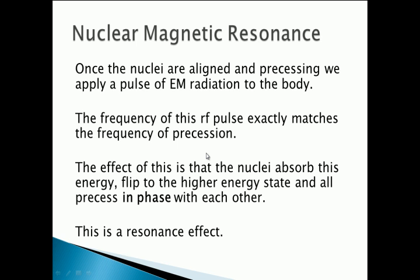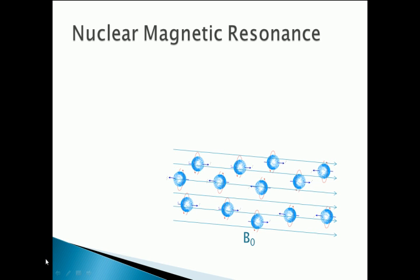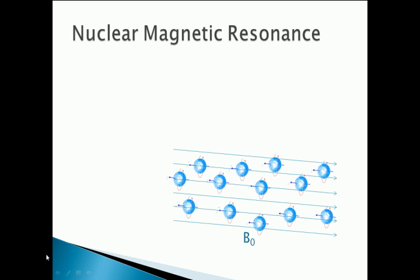The energy to flip the protons comes from the photons in the RF pulse. Crucially, the protons also start to precess in phase with each other, meaning they're all at the same part of the circle of precession at the same time — just like waves coming into phase have their peaks and troughs together. So the protons are precessing in phase, pretty much all of them in the higher energy state. Radio photons come in, and the protons in the lower energy state absorb the energy, flip to the higher energy state, and all start precessing in phase inside the magnetic field.